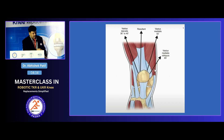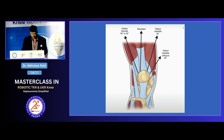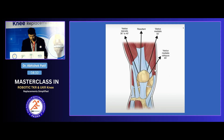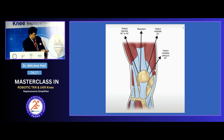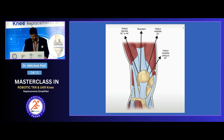The quadriceps mechanism is important from the point of view of exposure and patellofemoral mechanics. If there is one muscle most important for patellofemoral mechanics, it is the vastus medialis obliquus. Depending on whether you take a sub-vastus, mid-vastus, or medial parapatellar approach, it influences your patellar tracking later on.